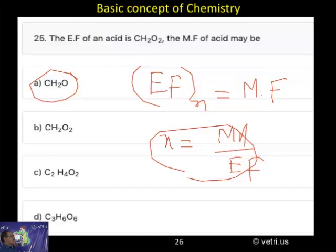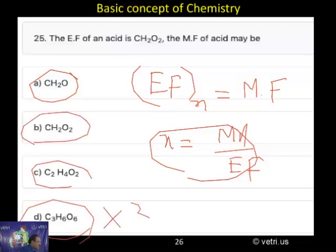So the empirical formula of acid is CH₂O₂, molecular formula of an acid may be. Here is given. See here, it is by 3 times it is given.